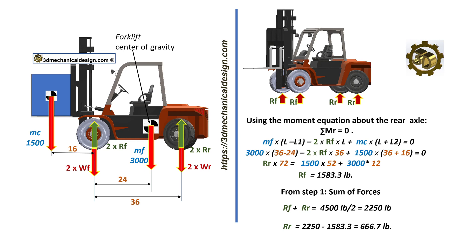Conclusion: The reaction on each of the two front wheels, RF, is 1,583.3 pounds. And the reaction on each of the rear wheels, RR, is 666.7 pounds. Thanks for watching, and please don't forget to subscribe if you like this video.